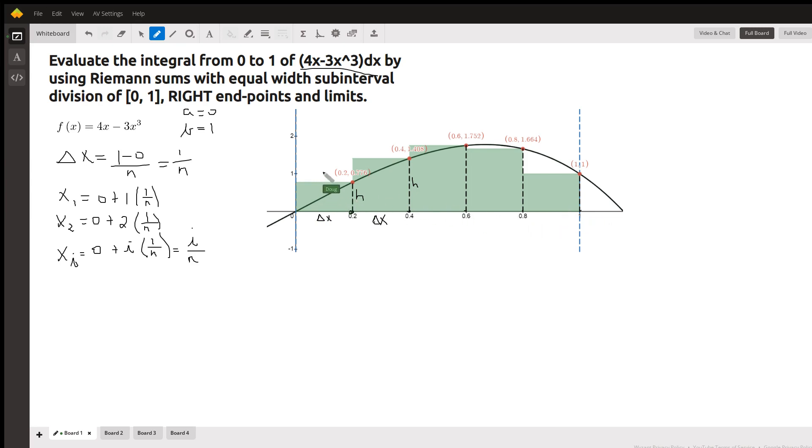But if we take the limit as n approaches infinity, as the number of rectangles gets bigger and bigger, we get closer and closer to the true area. Here's the original function. The left-hand endpoint is a, which is zero, and the right-hand endpoint is one, so b is one.